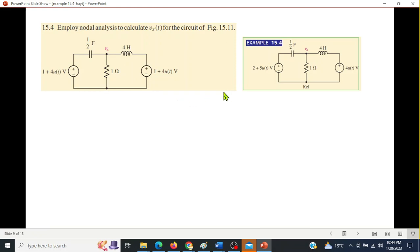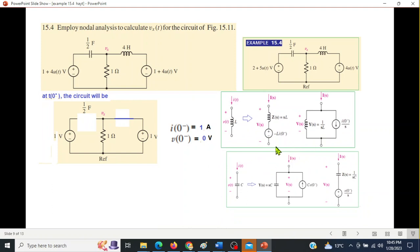Practice problem is exactly similar with some differences. In the question it was 2 plus 5ut and 4ut. Here both voltage values are the same: 1 plus 4ut and 1 plus 4ut. Using the same technique at t less than 0, ut is 0. v0 minus will be 0. Current is 1 divided by 1 ohm, so 1 ampere current. i0 is 1 ampere and v0 is 0 volt.